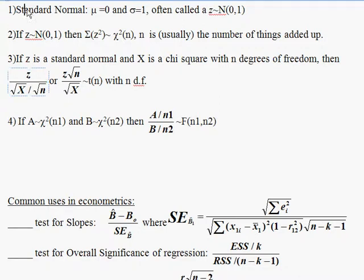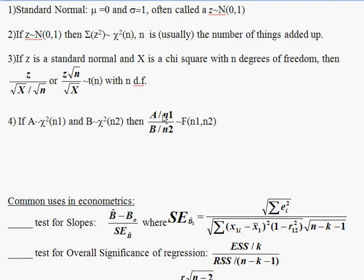So we have a standard normal, chi-square, and t-distribution. The final distribution you need to know is the F-distribution. An F is just the ratio of two chi-squared distributions. If you have chi-square a and chi-square b, an F is the ratio of those two chi-squares, but first you divide each by their respective degrees of freedom.